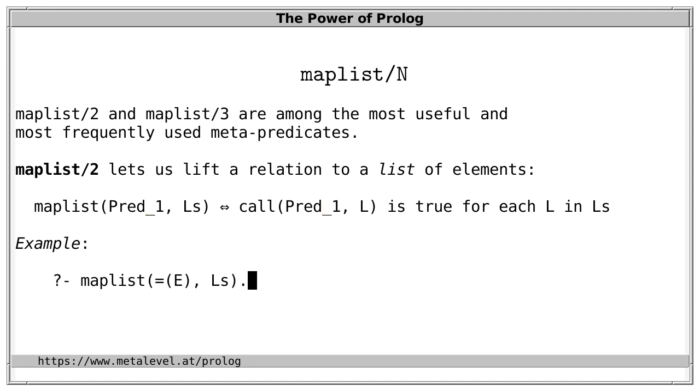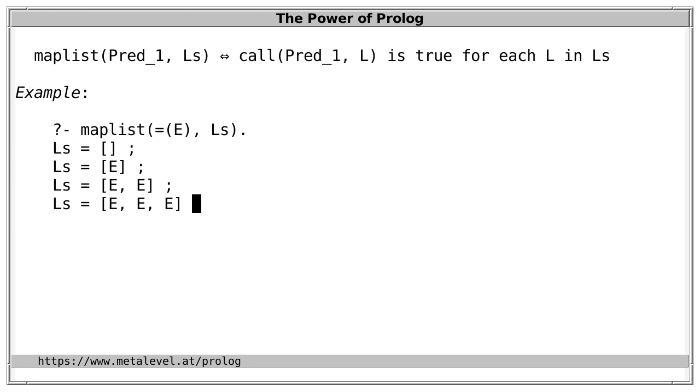And I use underscore 1 here to indicate that the goal will be called with one additional argument. For instance, we can express that all elements in a list are equal. So on backtracking we get lists where that is the case. So, when you see a pattern like this in your code, where a predicate must hold for each of x, y, z and so on, then you can shorten this with maplist.